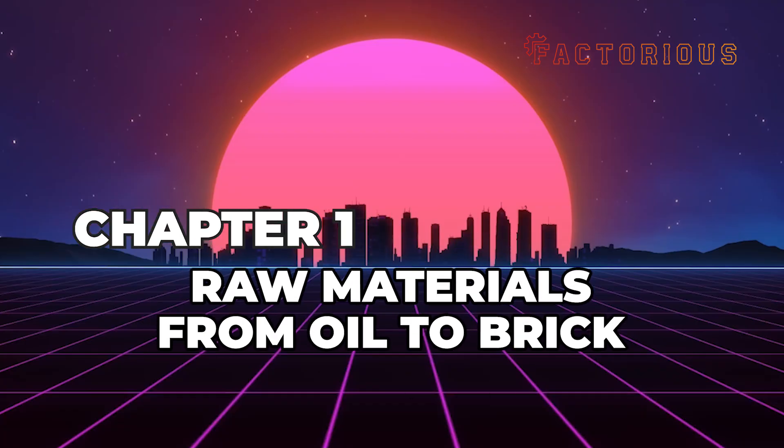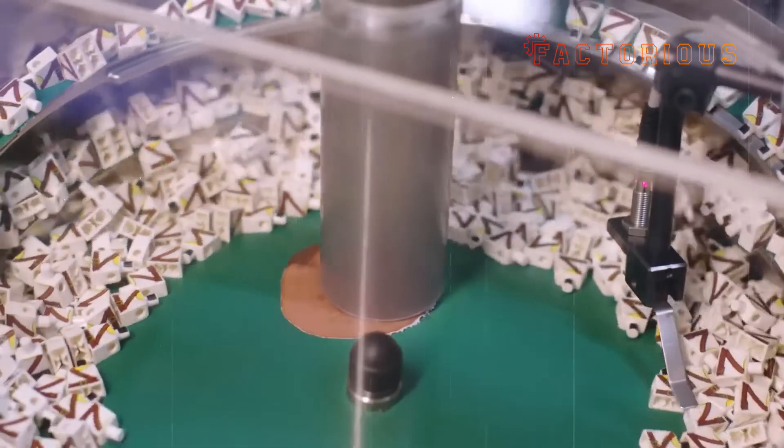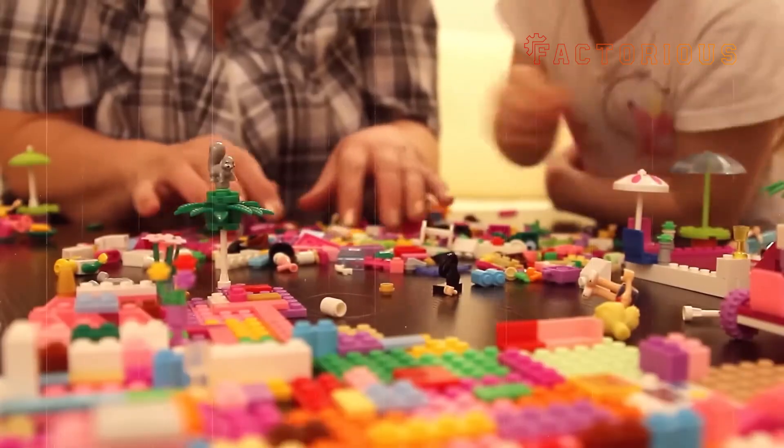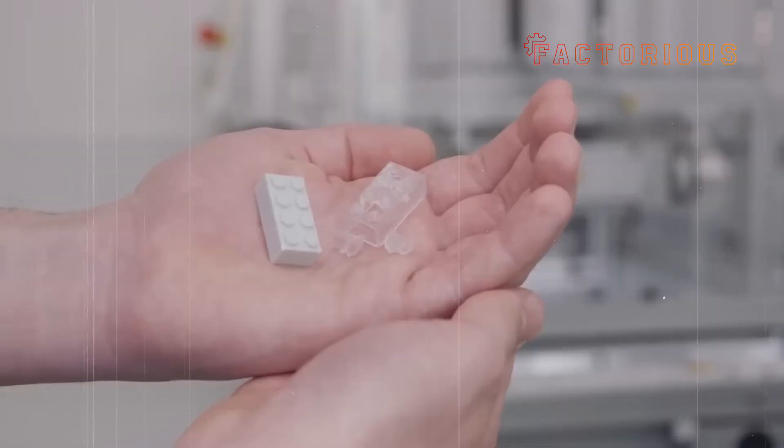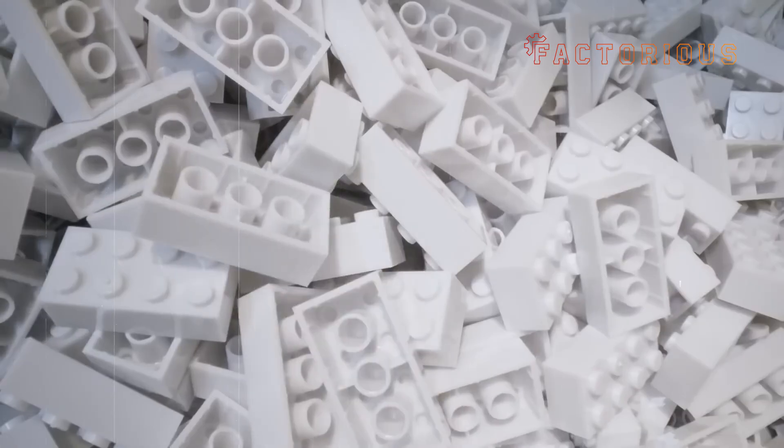Chapter 1. Raw Materials – From Oil to Brick. Let's start at the very beginning, with oil. Yes, Lego bricks begin life deep underground, in crude oil reserves. It sounds strange, but it's actually brilliant engineering.